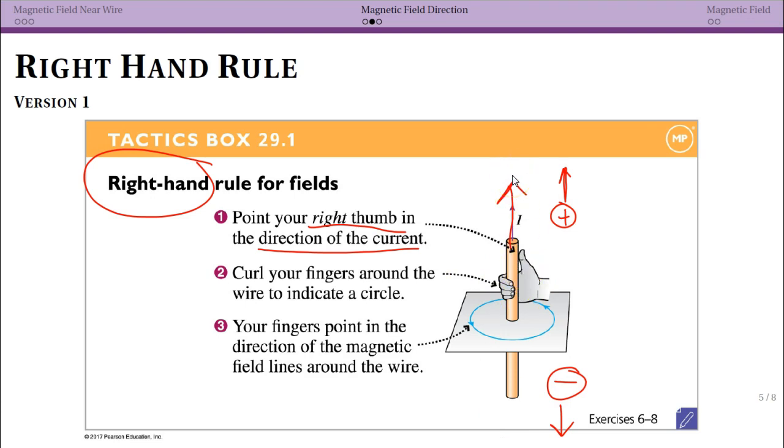And then you just let your fingers curl around like you're giving a thumbs up. And the direction your fingers go indicate the direction of the magnetic field. So your fingers are coming this way around, which is then the way your magnetic field is going. If the current was going down, you would be giving a thumbs down, and the current would be wrapping the opposite way around the wire.